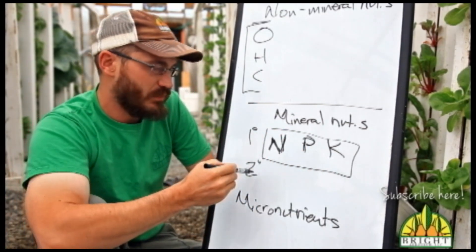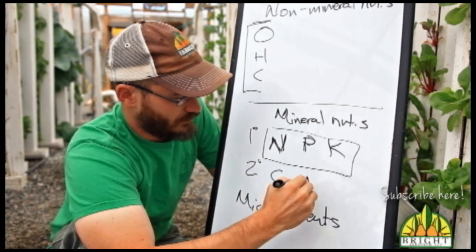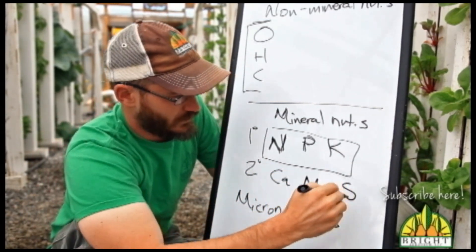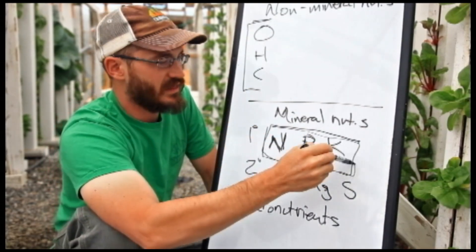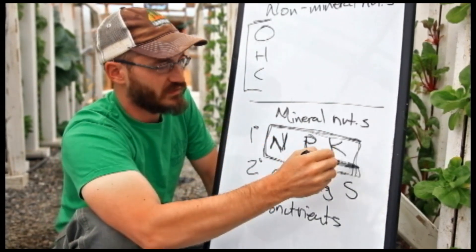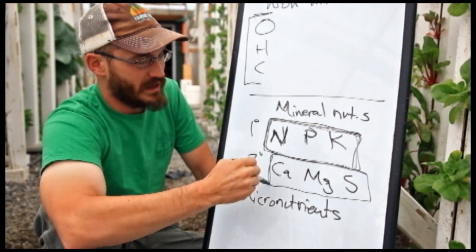The secondary plant nutrients are calcium, magnesium, and sulfur. Now, these are the plant nutrients that the plants require the most of, these primary plant nutrients. But these secondary plant nutrients are not too far behind.